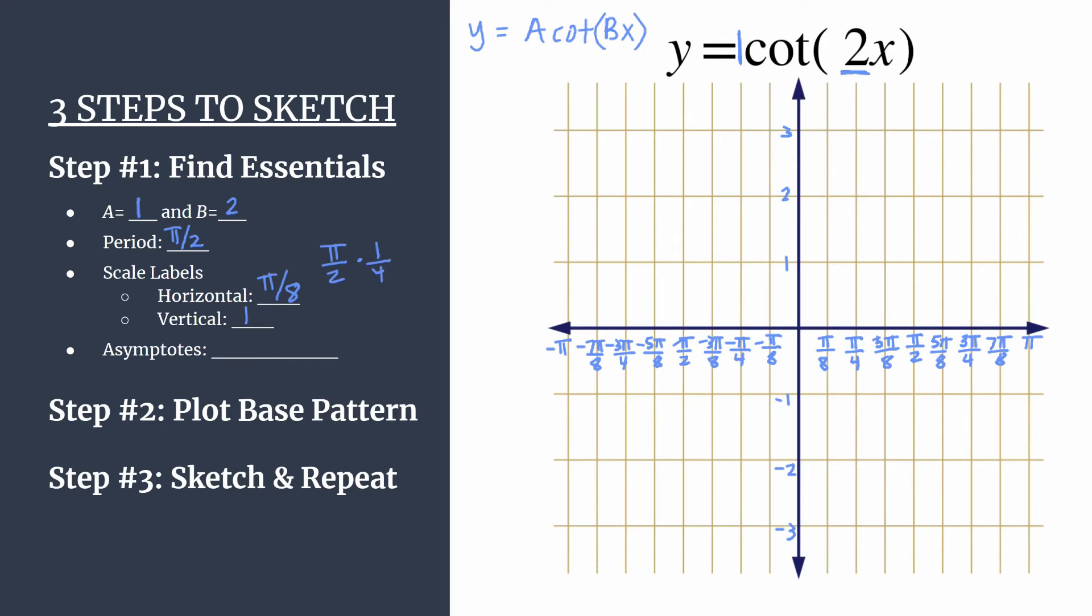Before we move into graphing, I like to find the asymptote generating equation. So there's a nice little formula for this. Our asymptotes happen once a period and we should know from our parent graph y equals cotangent x that our first asymptote for unshifted cotangent starts at x equals zero or on the y-axis. Okay.